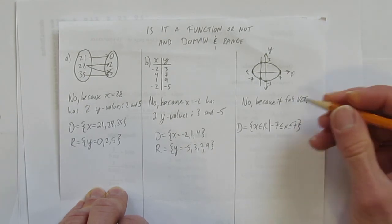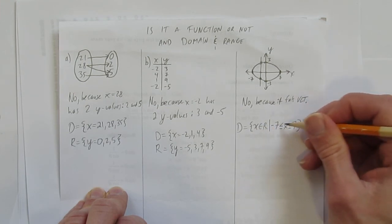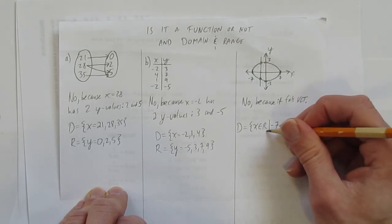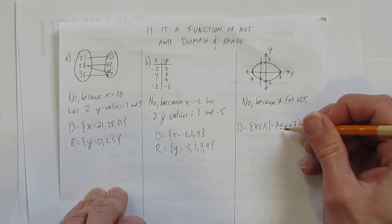I'm going to read that to you. The domain is the set of x is an element of R, such that negative 7 is less than or equal to x, which is less than or equal to 7. Or in other words, x can be any number, as long as it's between and including negative 7 to 7.